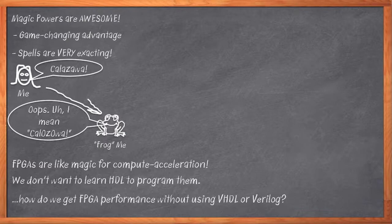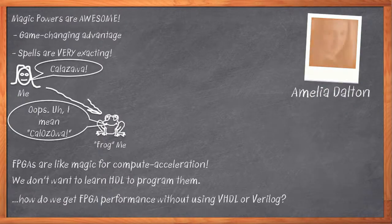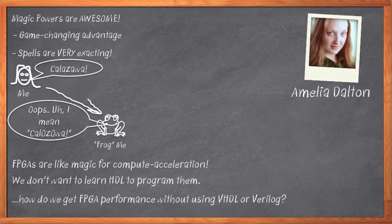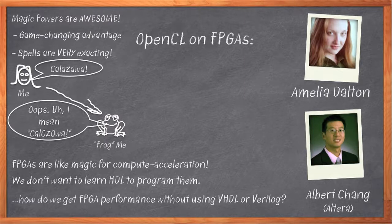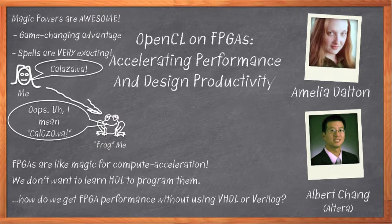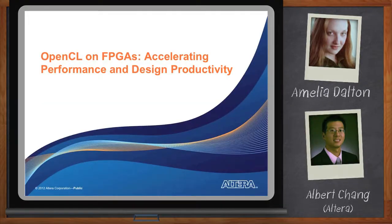But we still want to harness the power of FPGAs to make our stuff run fast. Hi, I'm Amelia Dalton, host of Chalk Talk. Today's FPGAs have amazing capabilities, but most of us don't have the time to become experts in HDL in order to take advantage of them. My guest today is Albert Chang of Altera, who will be talking with me about OpenCL — the same language used for programming parallel processors like graphics chips can now be used to program FPGAs. Remember to click on that download now button below your player to download a free white paper entitled "Implementing FPGA Design with the OpenCL Standard."